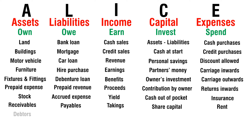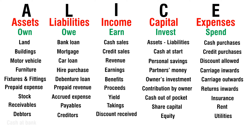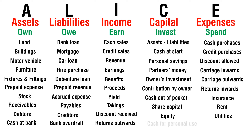Rent — spend. Debtors — own. Creditors — owe. Discount received — earn. Equity — invest. Utilities — spend. Cash at bank — own. Bank overdraft — owe. Returns outwards — earn.